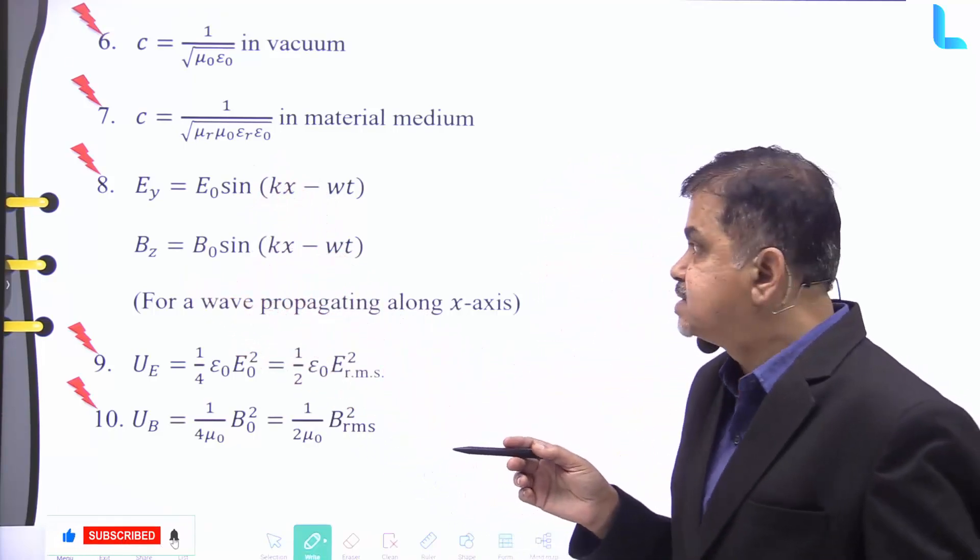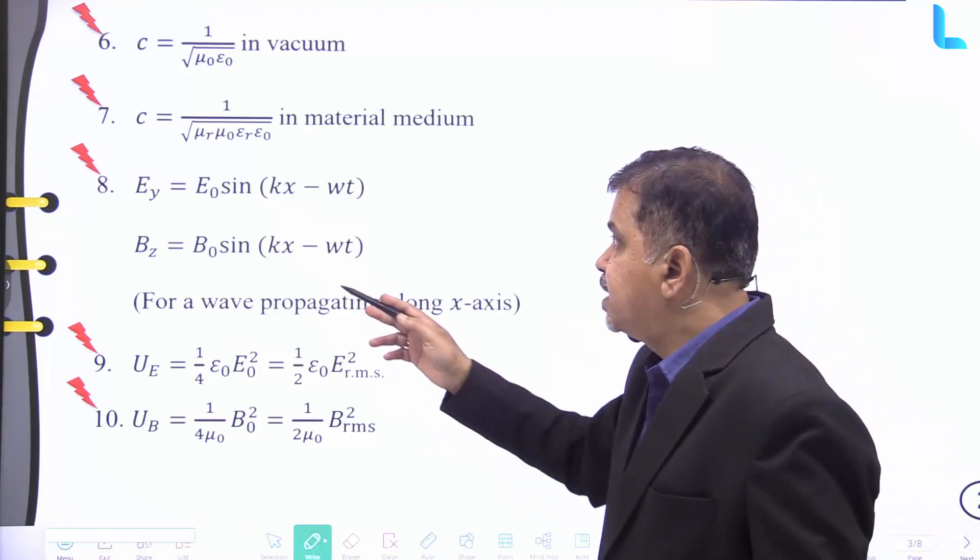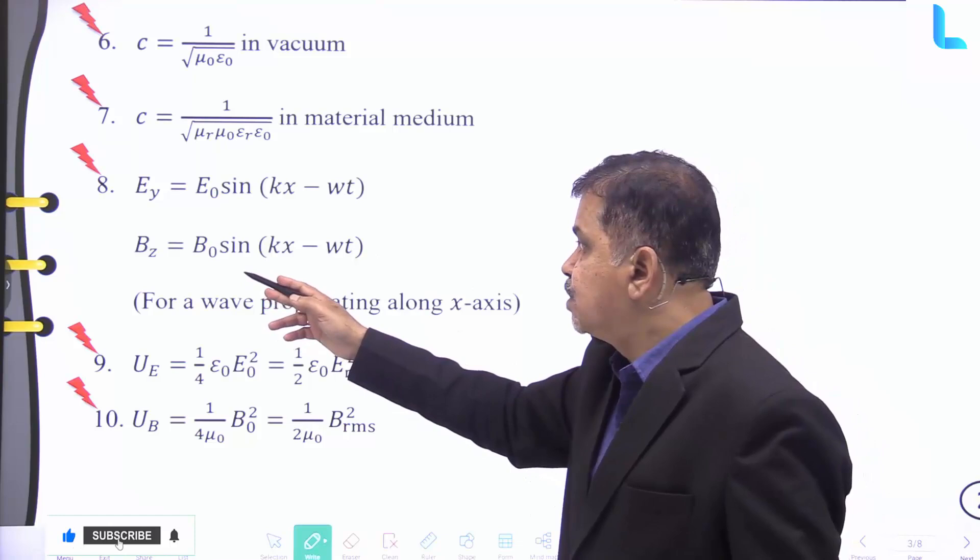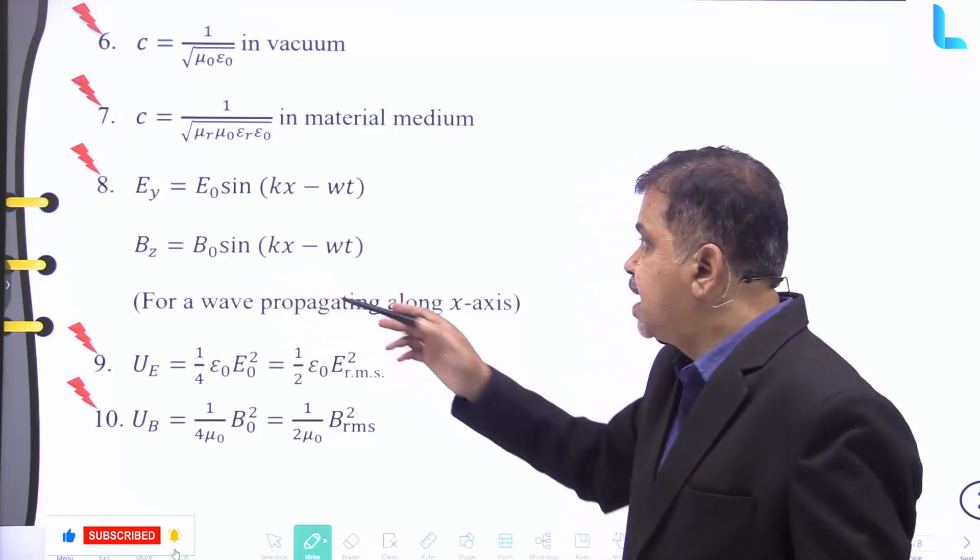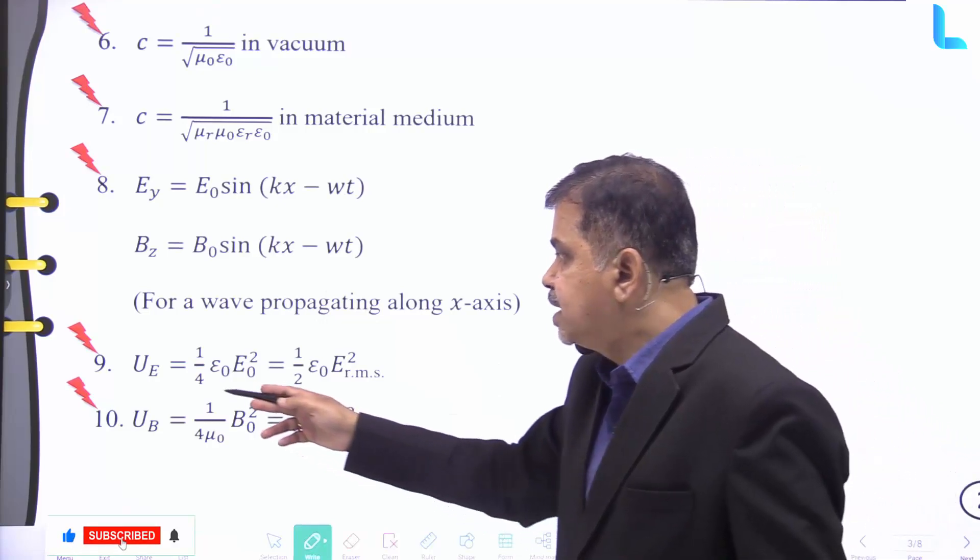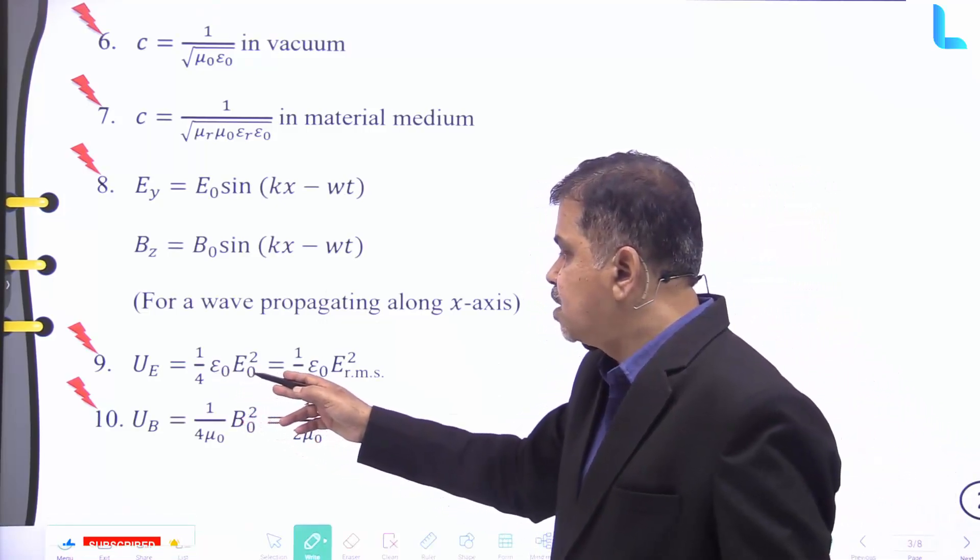For a wave propagating along x-axis we have Ey equal to E₀ into sin(kx minus ωt) and Bz equal to B₀ into sin(kx minus ωt).